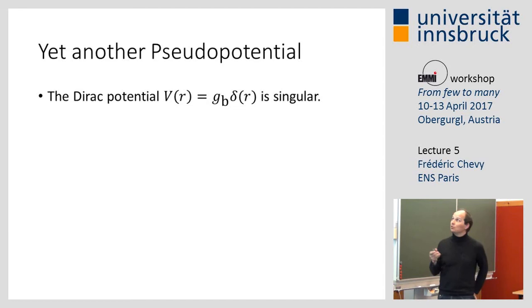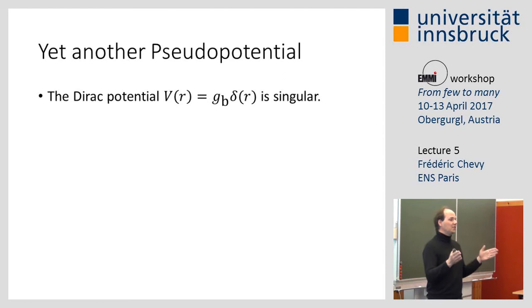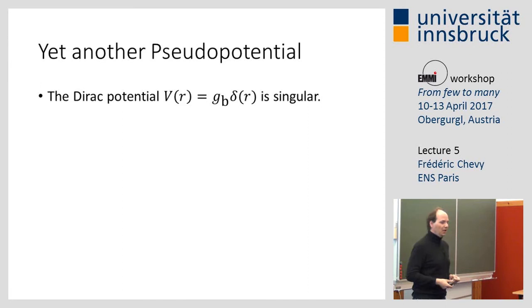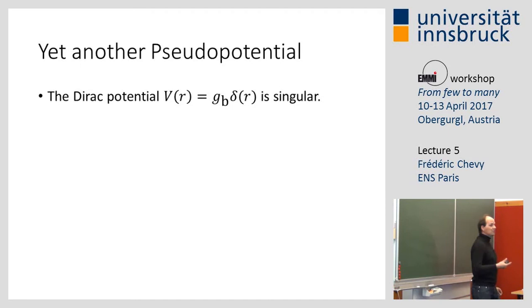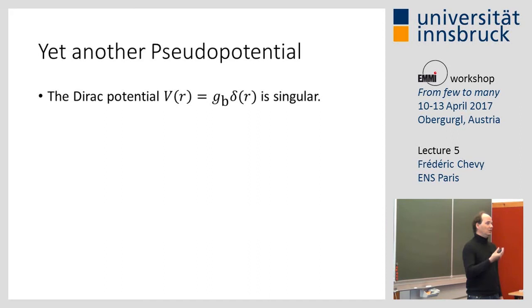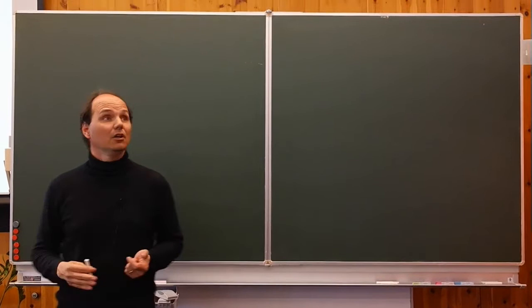The starting point of Tan's approach is to note that the Dirac potential — some coupling constant times delta — is singular. When you take a realistic potential, such as van der Waals plus hardcore, and take the range to zero, if you don't work carefully, everything blows up. You cannot simply replace your potential by a Dirac potential. I would like to illustrate this on a simple calculation: a bound state of a pair of cold atoms. I solve the Schrödinger equation for the two-body problem to find the bound state.